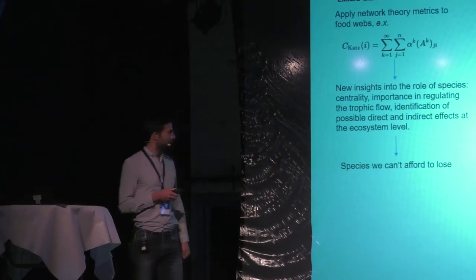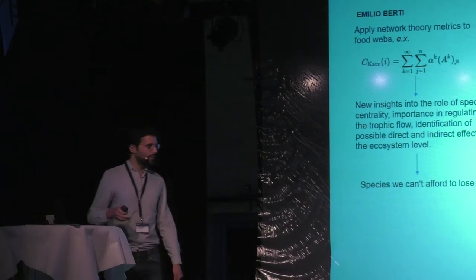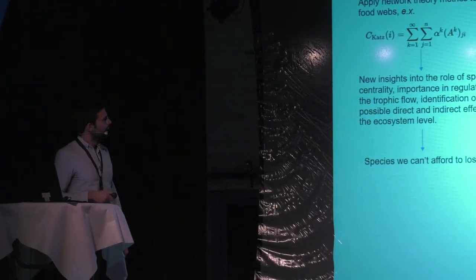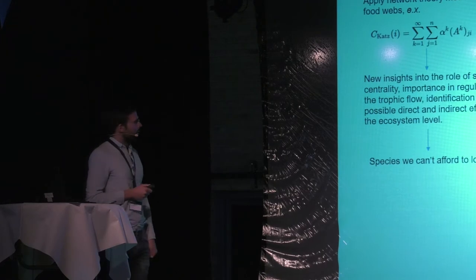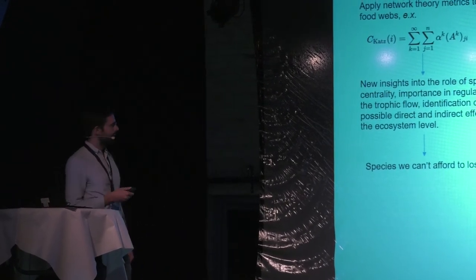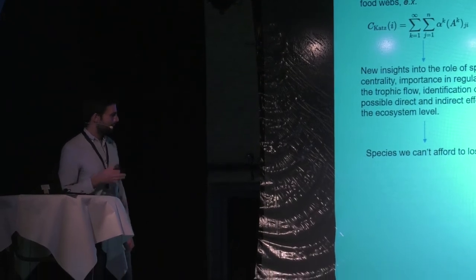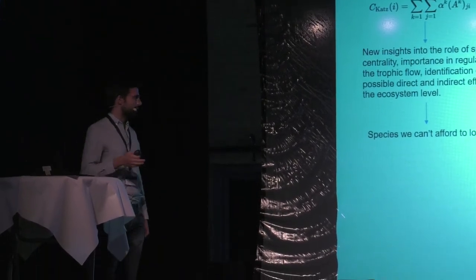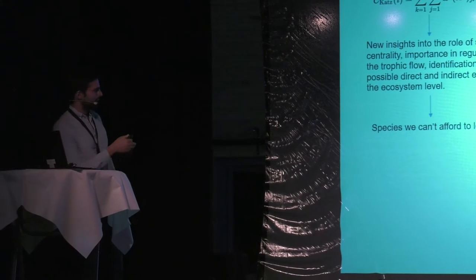So the size of a node is directly proportional to its centrality. At this point, I can ask where is a particular species, for example the elephant. It's here, which has relatively high centrality and a lot of neighbors. And I may ask also where is the lion, for example. The lion is here.